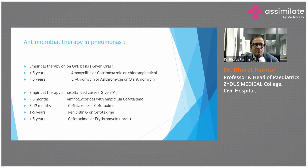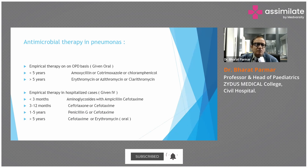Antimicrobial therapy in pneumonia — empirical therapy on an OPD basis and empirical therapy for hospitalized cases. For OPD empirical therapy when age is less than five years, the choice of oral therapy is amoxicillin, cotrimoxazole, or chloramphenicol. For age more than five years, the choice of oral therapy is erythromycin, azithromycin, or clarithromycin.